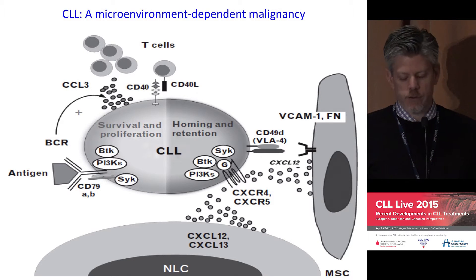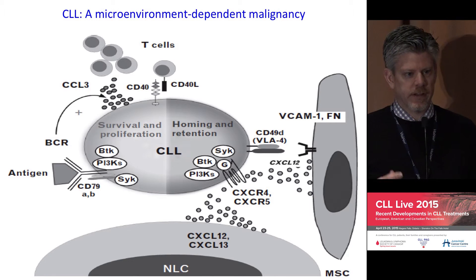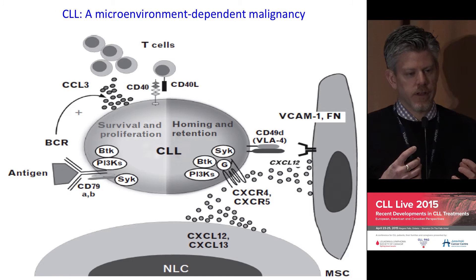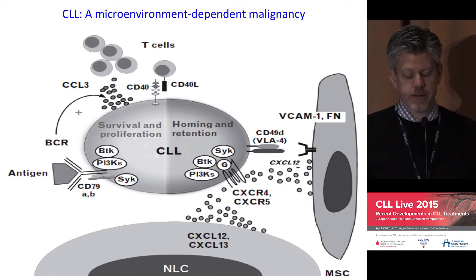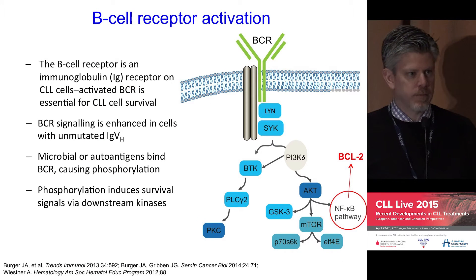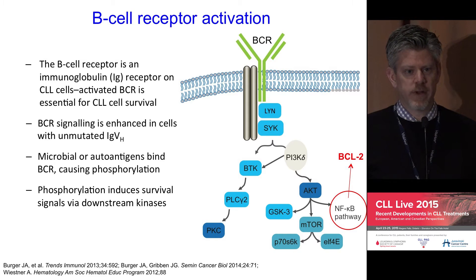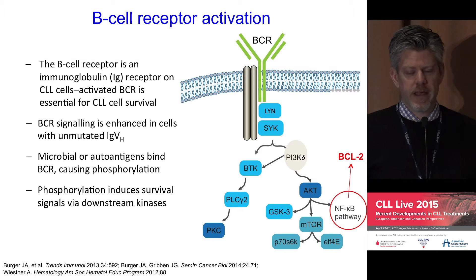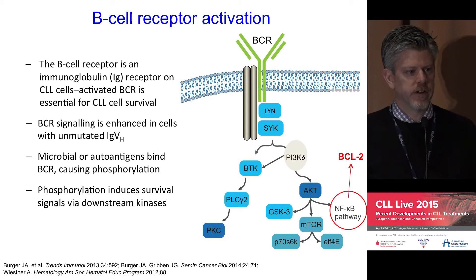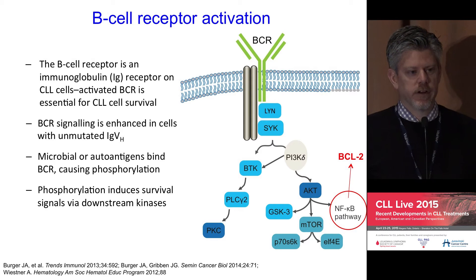Signaling through the B cell receptor, as well as interactions with other cells within the microenvironment, allow not only the CLL cells to home and be retained within these niches, but also to survive and proliferate protected. This will come up regularly in this meeting because of the specific development of B cell receptor pathway inhibitors, most notably Ibrutinib and Idelalisib. The B cell receptor and its activation and signaling has turned out to be very important in understanding disease biology and as a target for drug development.